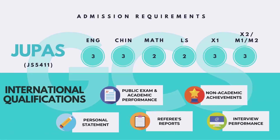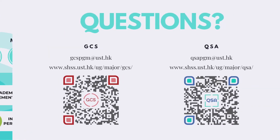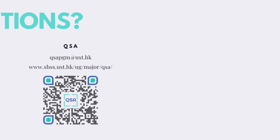If you're applying through the JUPA system, we require four core subjects and two electives. We will double count the score of English and multiply the score of Chinese by 1.5. If you're an international applicant, we'll review both your academic and non-academic performance, your personal statement, referee's reports, and interview performance. You may also check out the respective admission requirements on the admissions office website, join.ust.hk. Please check out our program website and follow us on social media platforms for more updates. I hope this video helped you learn more about our program. We look forward to seeing you at UST. Thank you.